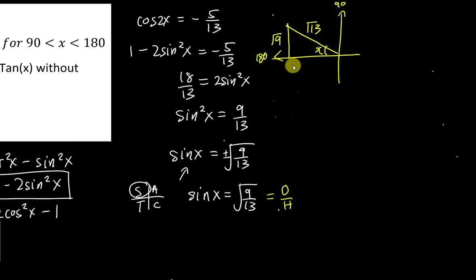So if I want to find my adjacent here, which is my adjacent, right? So I will just do the square root hypotenuse square minus opposite square. So square root 13 square, I get 13. And square root 9 square, I will get minus 9.